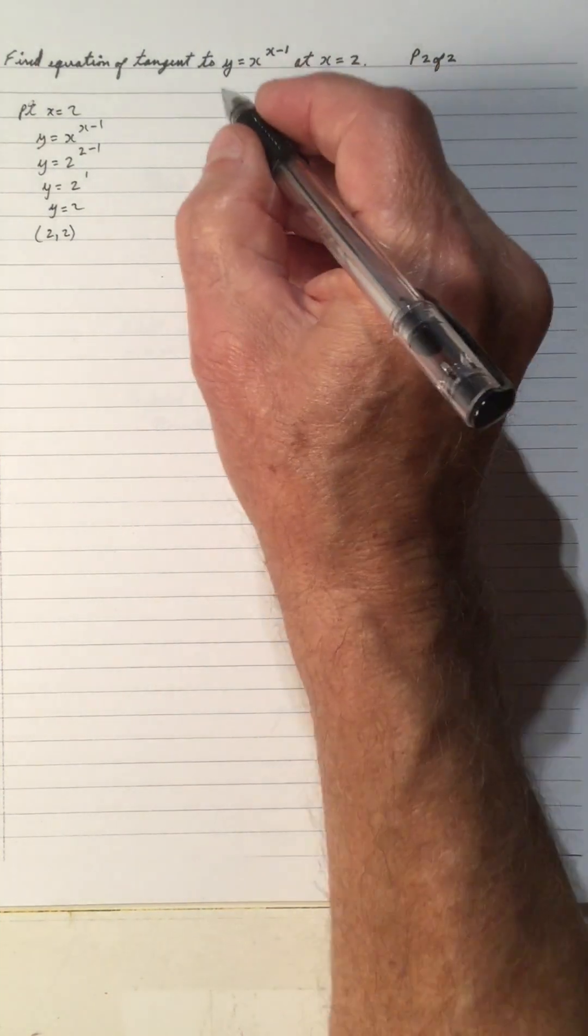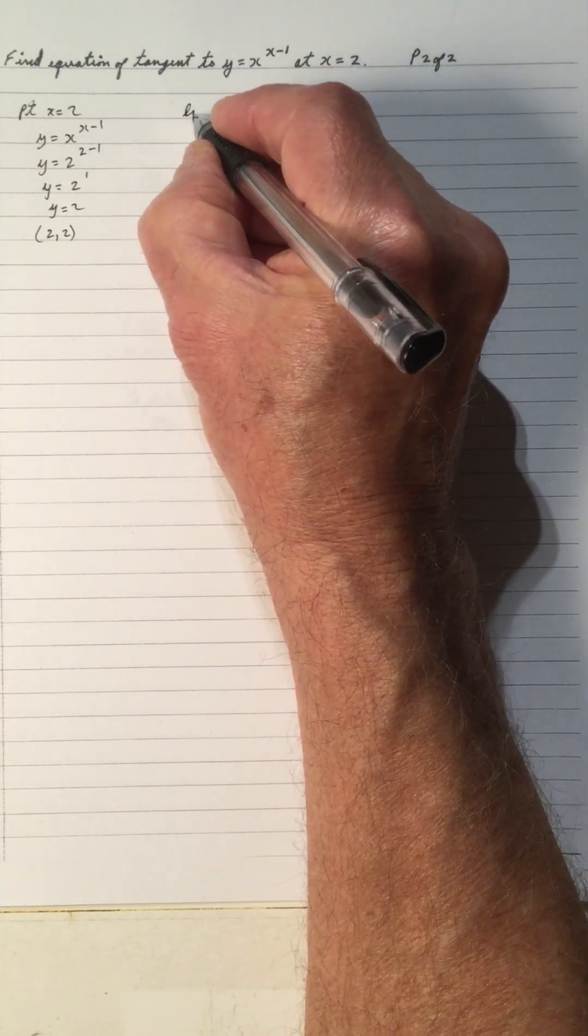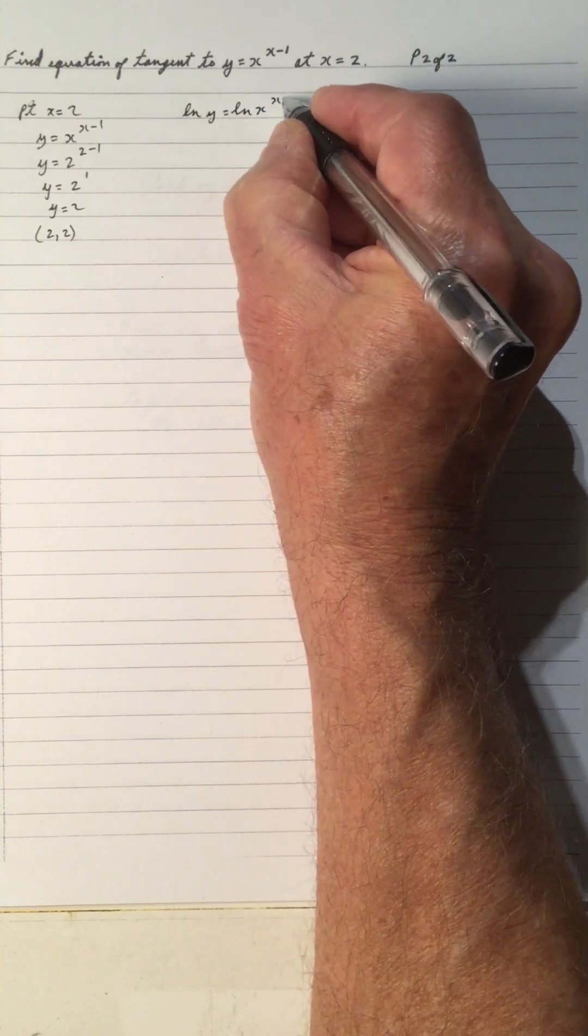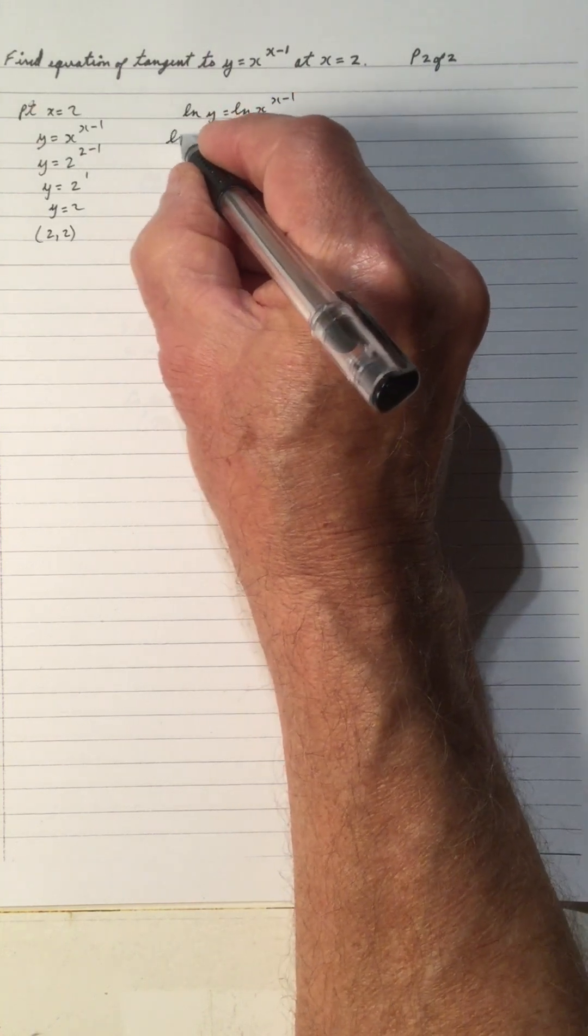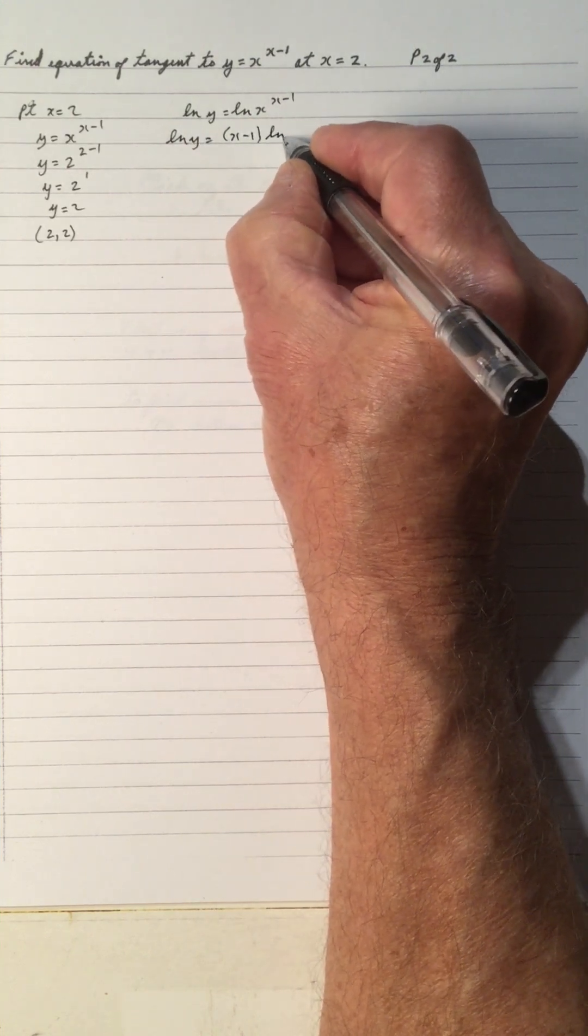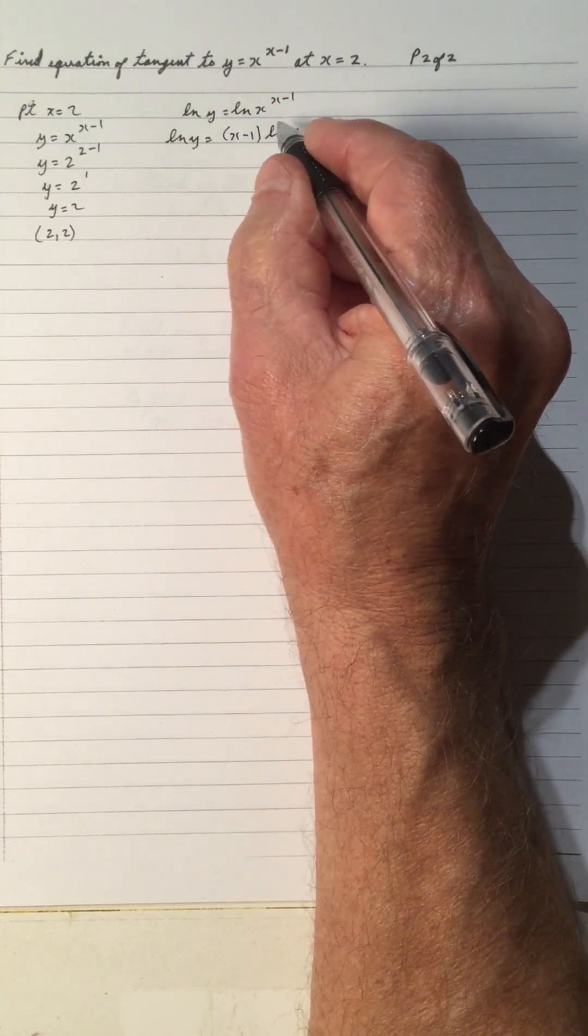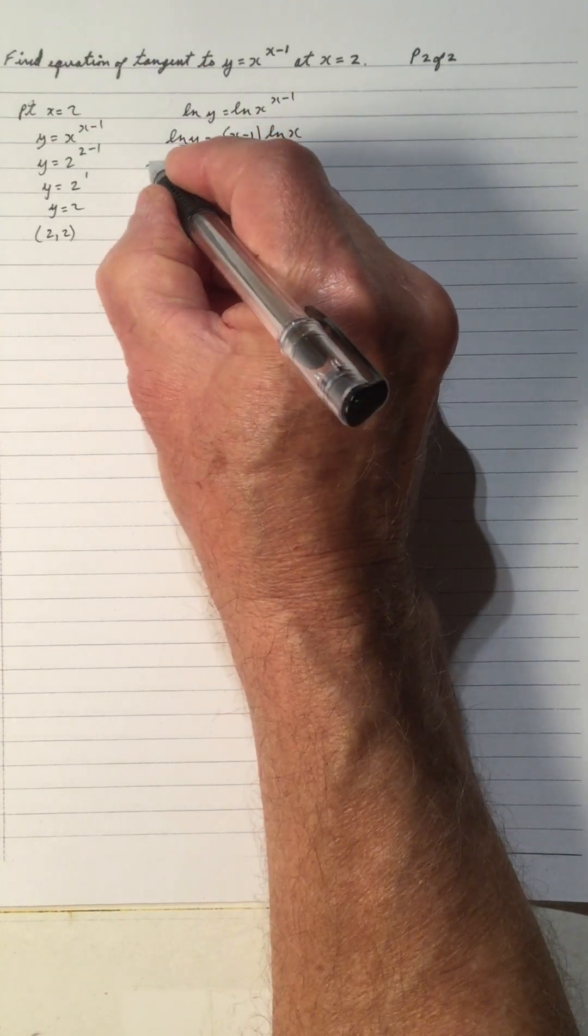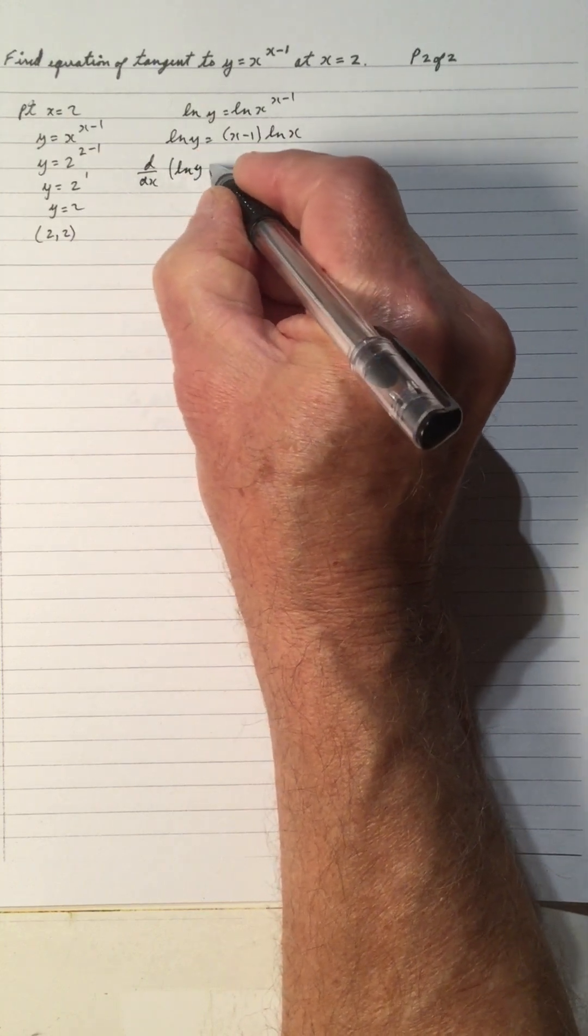And now let's get looking at the derivative. Because the x is in the exponent, I will do the log of each side. And when we do, the log brings the exponent to the front. So ln y equals x minus 1 times ln x. Now, since we have the log done and we have the exponent x minus 1 to the front, we'll do d dx on each side. Again, the same pattern all the time.